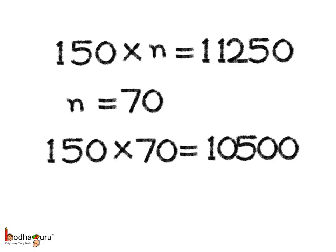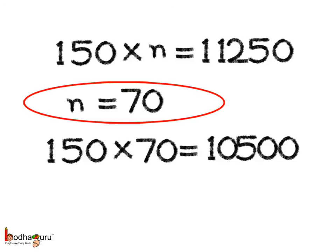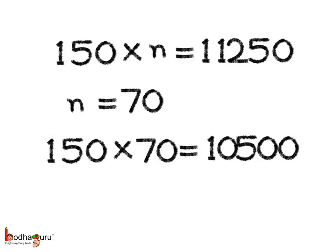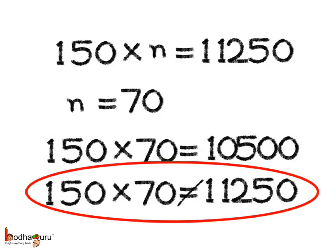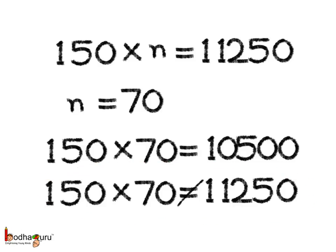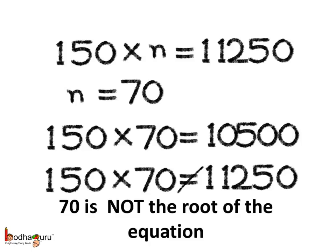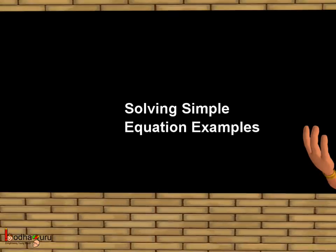Now, let's try some other value, say N equal to 70. Putting the value of N, 150 multiplied by 70 is equal to 10,500, which means 150 multiplied by 70 is not equal to 11,250. The right hand side and the left hand side of the equation are not the same on putting the value of N equal to 70. So, we can say 70 is not the root of the equation. Now you know how to solve a simple equation and how to find the root of the equation. That's all for now. Bye-bye children.